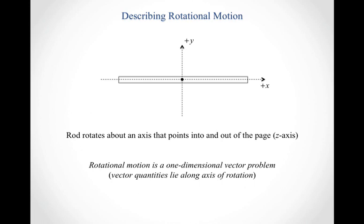For our rotational motion problems, they're vector problems, but we're going to focus on one-dimensional vector problems. We're basically going to say that as vectors, all quantities are either going to point in the positive z or the negative z direction. So we treat these as one-dimensional vector problems where all vector quantities — angular displacement, angular velocity, and angular acceleration — lie along the axis of rotation.